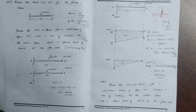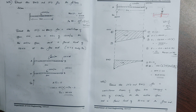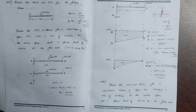Draw the Shear Force Diagram and Bending Moment Diagram for a cantilever beam of span 5m, carrying a UDL of 4kN per meter on the entire span and a point load of 80kN at the free end.